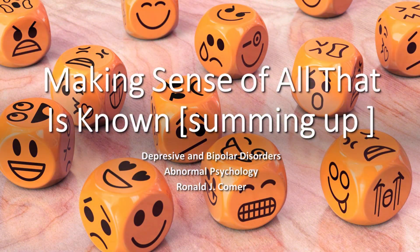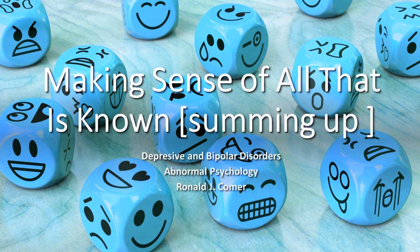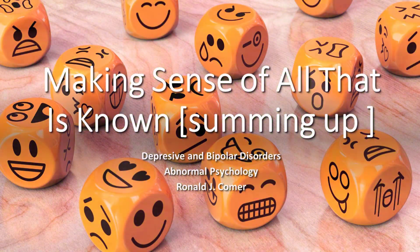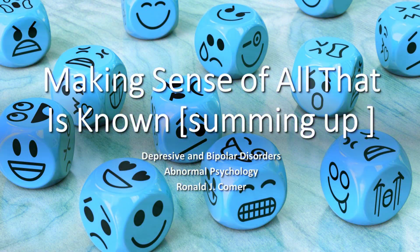The behavioral view says that when people experience a large reduction in their positive rewards in life, they may display fewer and fewer positive behaviors. This response leads to a still lower rate of positive rewards and eventually to depression. The leading cognitive explanations focus on negative thinking and learned helplessness. According to Beck's theory of negative thinking, maladaptive attitudes, the cognitive triad, errors in thinking, and automatic thoughts help produce unipolar depression.